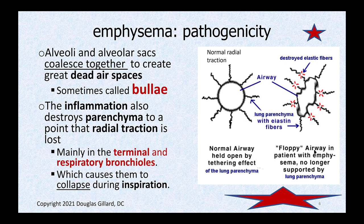The inflammation also destroys the parenchyma of the small areas. The bronchioles are tubes — they don't have any cartilage in them, so when you take a deep breath, they want to collapse. But they don't collapse because there are strings of elastic within the substance of the lung, called the parenchyma, which hold these tubes open. The inflammation of emphysema destroys the elastic fiber here. Therefore, when you take a breath in, these tubes can collapse. This is called radial traction, and it's destroyed in this condition.